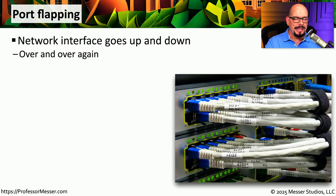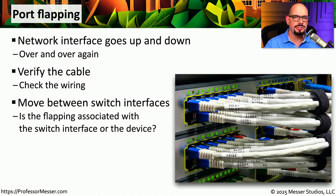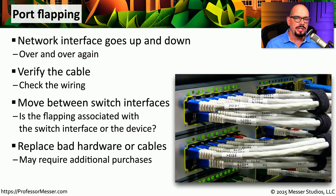Port flapping is when you have a link light on your ethernet connection, then you don't have a link light, then you have a link light again, and that interface continues to go up and down. Many times this is a physical problem associated with the cable you're using. By replacing the cable or putting on a new connector, you may be able to resolve the port flapping problem. The problem could also be the physical interface on the switch. If you move your ethernet cable to a different port on that switch, you'll be able to determine if the problem follows the cable or is resolved.